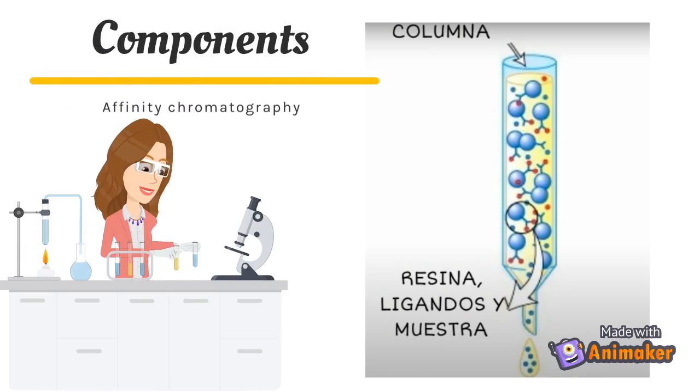Components of affinity chromatography: it is usually carried out in the column which is filled with the supporting material or the matrix, for example, resin, ligands, and sample.